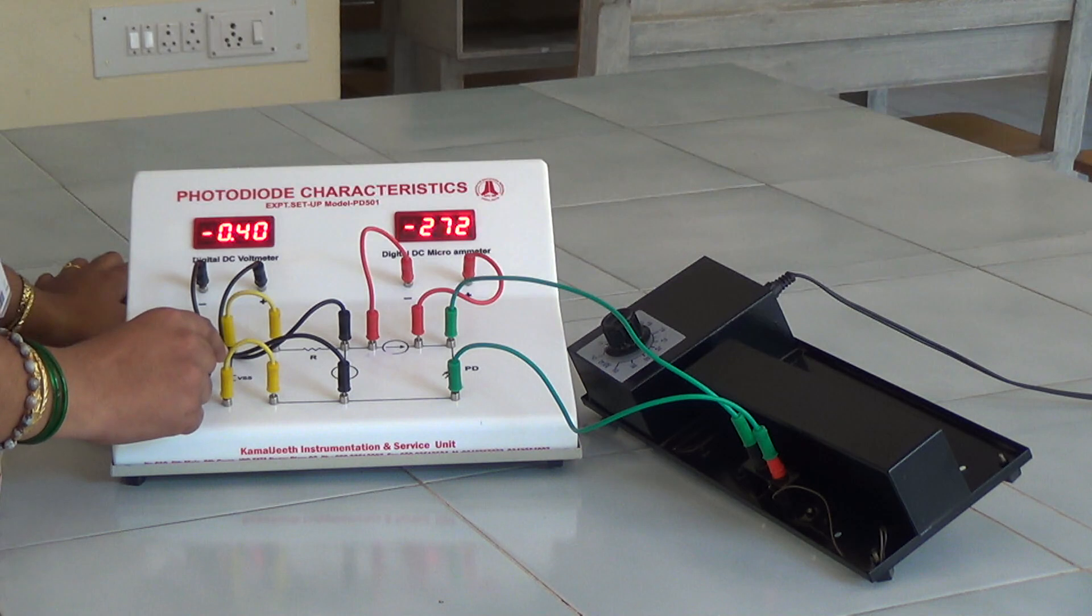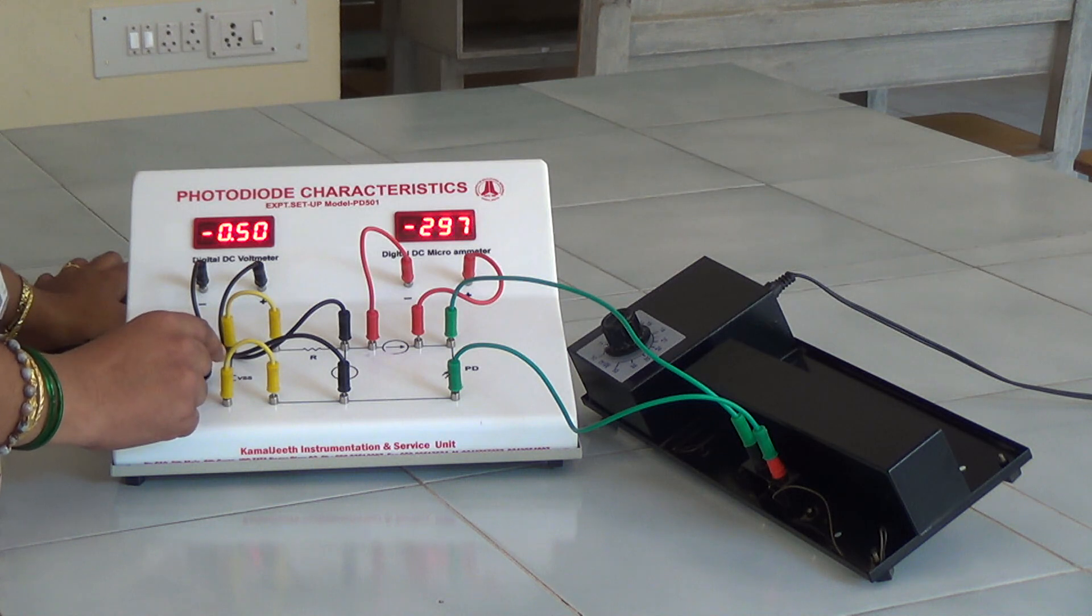Further, we increase the voltage by 0.1 volt. That is, we set it to 0.5 and then we note down the microammeter reading.